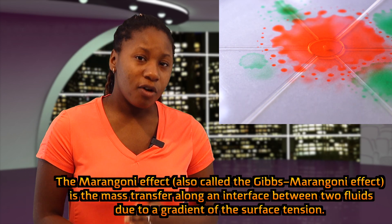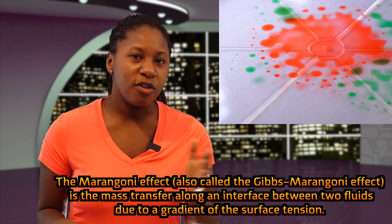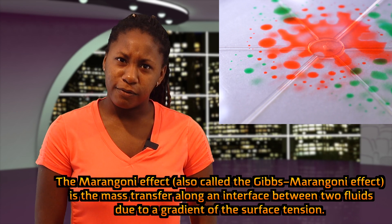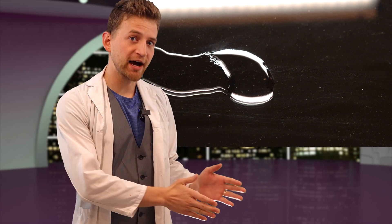The Marangoni effect is the transfer of mass along an interface between two fluids due to a difference of surface tension. Essentially, in layman's terms, if you have two different fluids each with a different surface tension — say water, which has a fairly high surface tension, versus isopropyl alcohol, which has a low surface tension — there will be a flow from the low surface tension to the high surface tension.